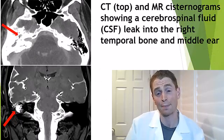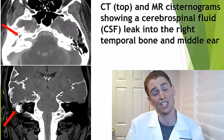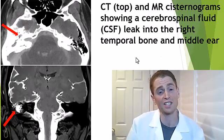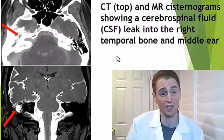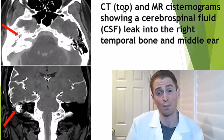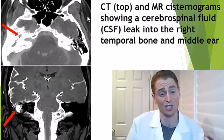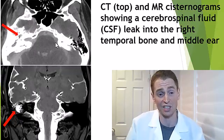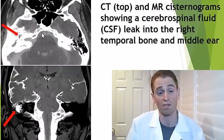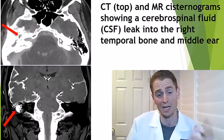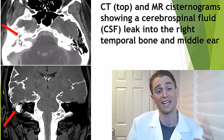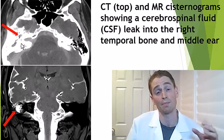Here's an example of a diagnostic test called cisternography, looking at the cerebrospinal fluid. This is someone with a CSF leak into the area of the right temporal bone and the right ear. On top, we're seeing a CT cisternogram where dye is injected directly into the cerebrospinal fluid — not into the arteries or veins — and it fills up the subarachnoid space, then leaks into the area where the leakage is occurring so that it can be surgically repaired.